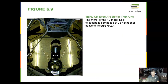Of course, we think that 36 eyes are better than one. In order to build a compact but very large telescope, we can use segmented mirrors. These segments are all joined together to make one large mirror. This is for the Keck Telescope in Hawaii.